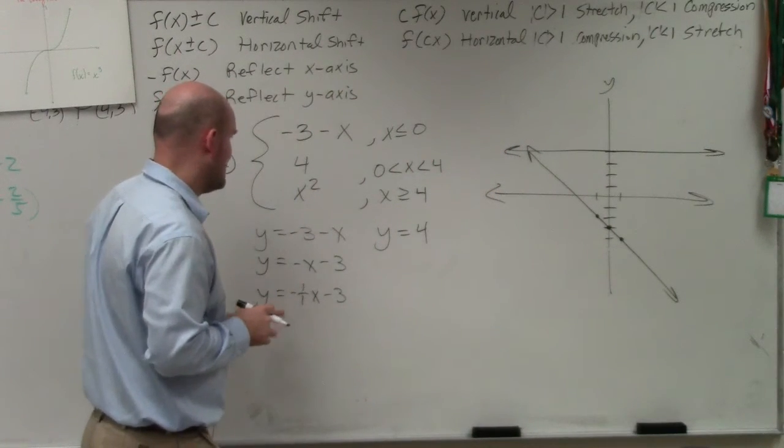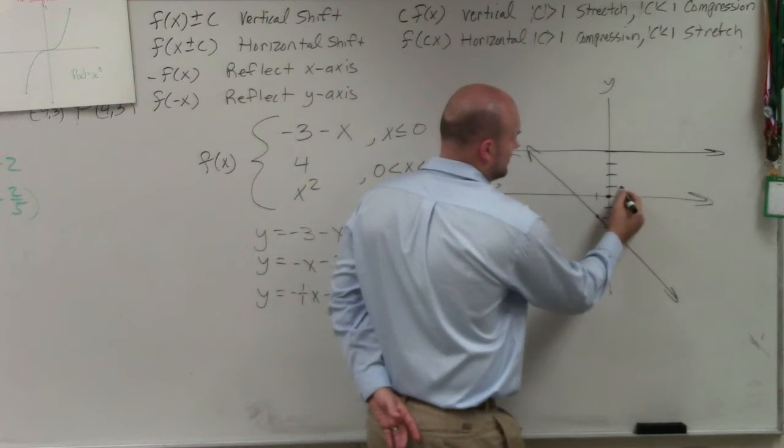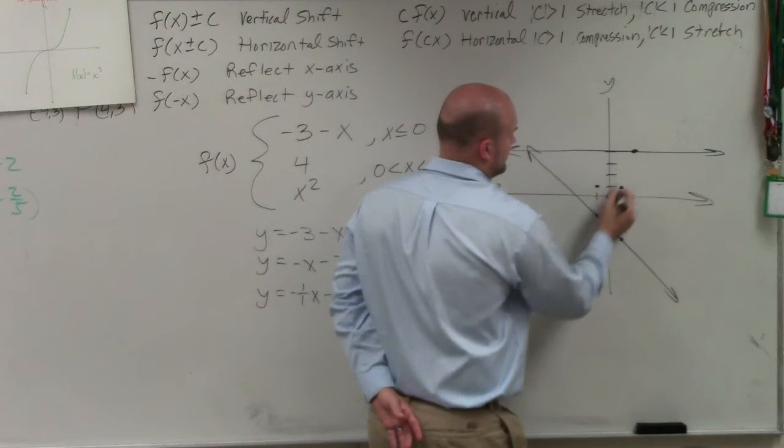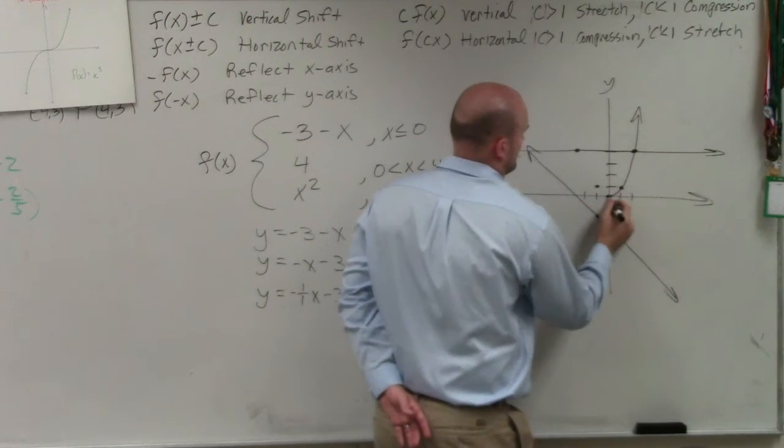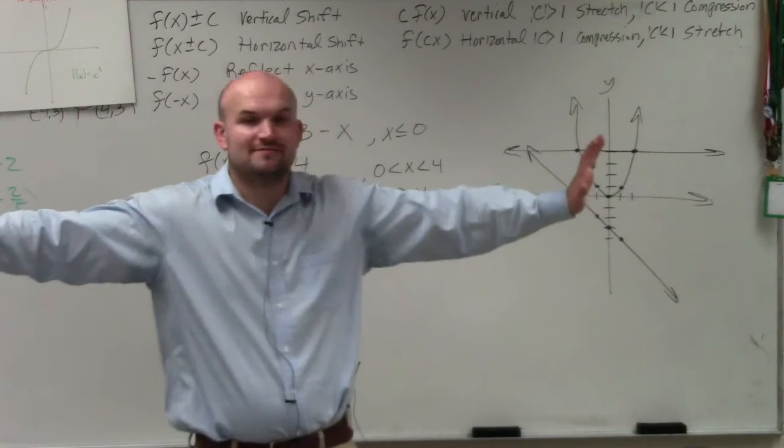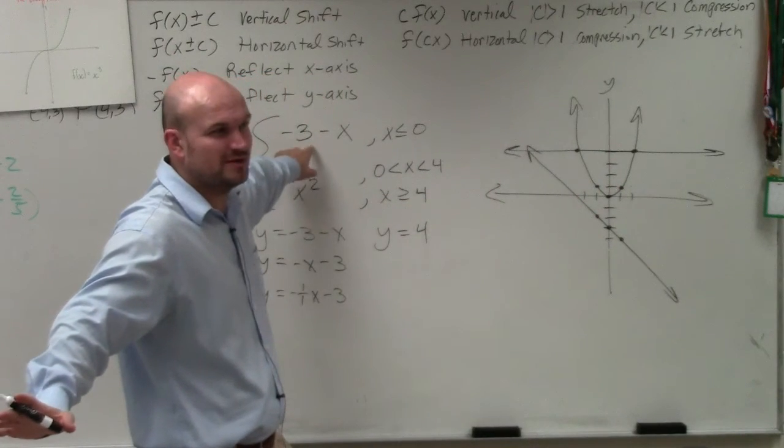And then my last one is another quadratic. So again, that goes here, over 1, up 1, over 2, up 4. 1, 2, 2, 3, 4. So again, all I did was graph identity functions. This one had a little bit of transformation. This one was a line, but we practice graphing lines.